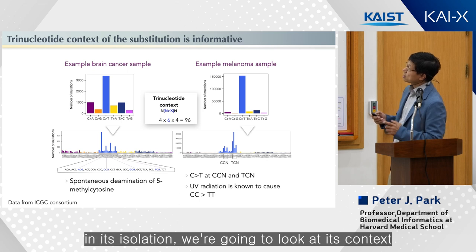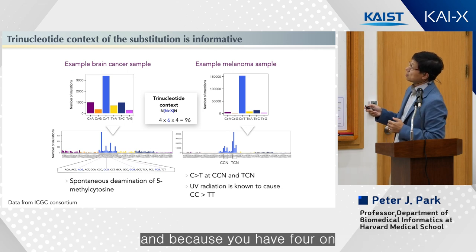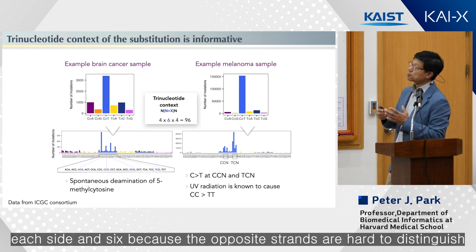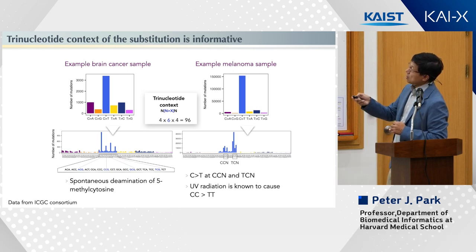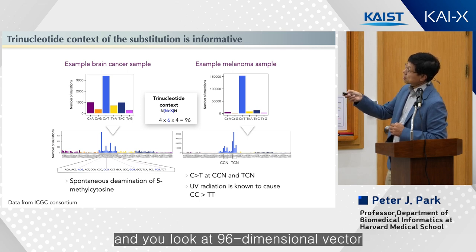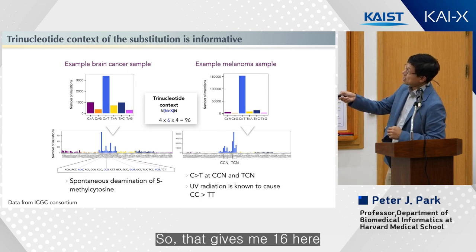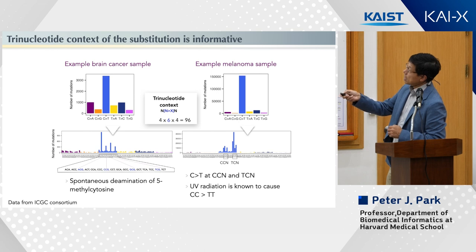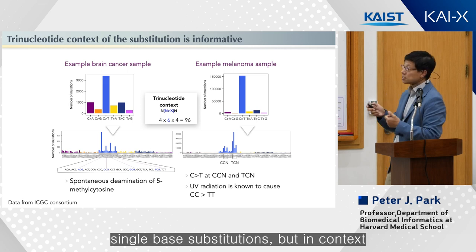We look one base to the left and one base to the right. Because you have four on each side and six possible substitutions — it's six because the opposite strands are hard to distinguish — you get a 96-dimensional vector. So for C to T, I look at all the neighbors, giving me 16 combinations. If you look at the 96-dimensional vector of single base substitutions in their context for brain cancer samples, they look very different from melanoma.